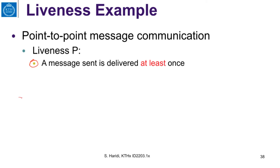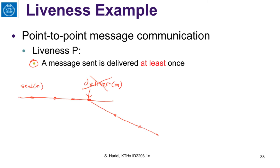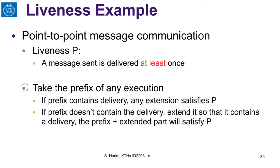If we have an execution and look at its trace — if a message that has been sent has already been delivered, fine, we are satisfying the property. But if up to some prefix there is no delivery of M, we can always find an extension where we actually deliver the message. So we say this property is a liveness property: take any prefix, and we can always extend it so that it contains a delivery, thus satisfying P.